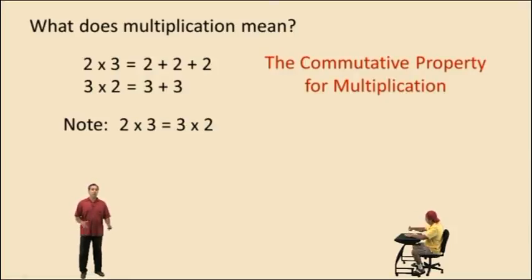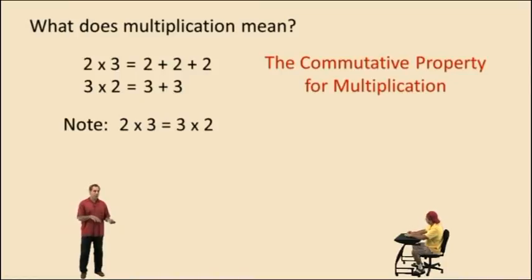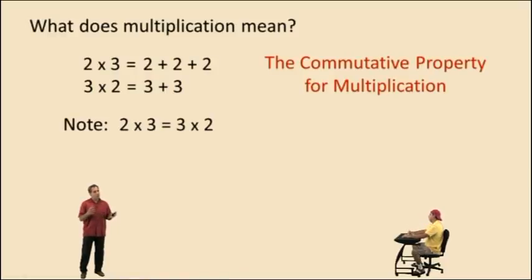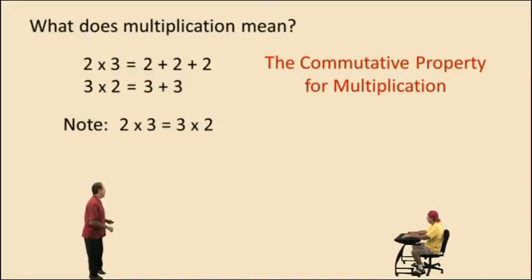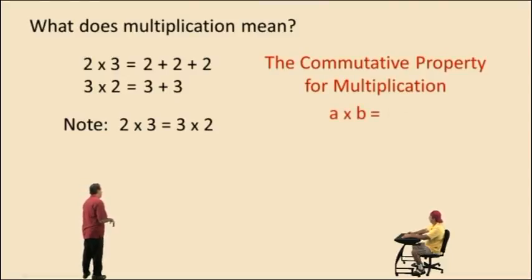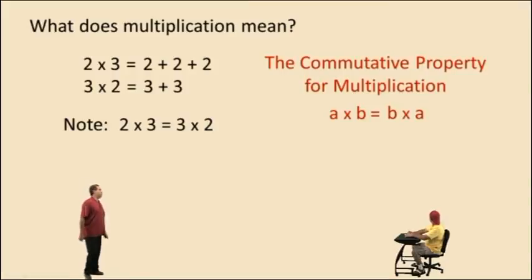This is a demonstration of the commutative property for multiplication. Remember, we had a commutative property for addition, which basically told us that two plus three is the same as three plus two. Well since multiplication is really addition, two times three actually equals three times two — that's why there is a commutative property for multiplication. It states that a times b equals b times a, so you can multiply two numbers in any order and get the same result.